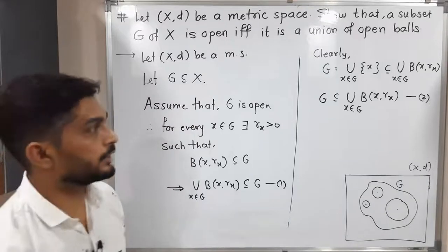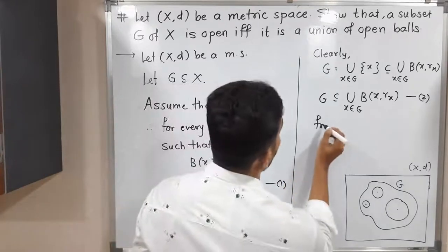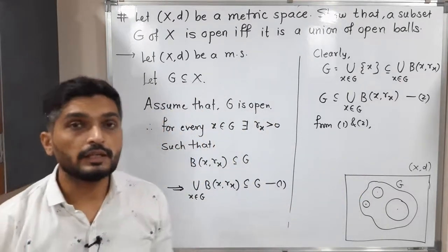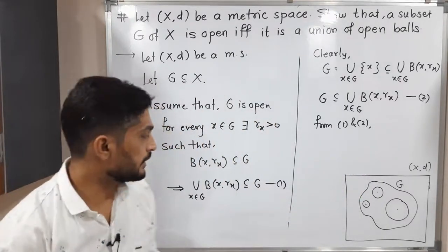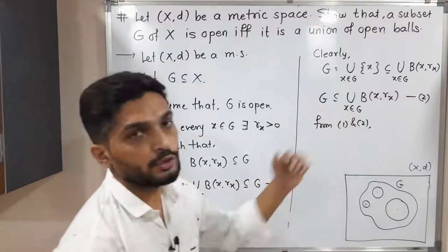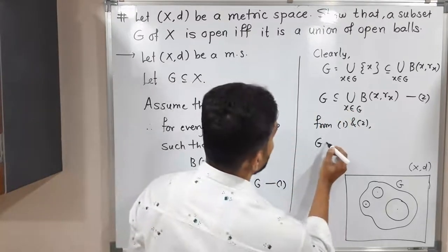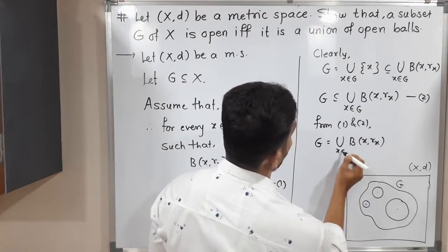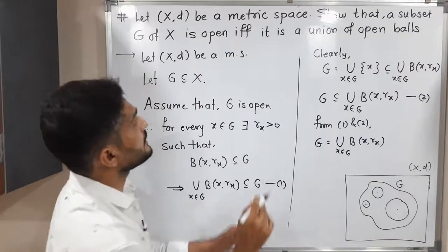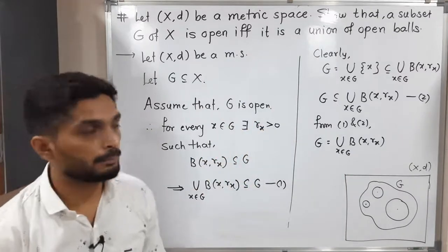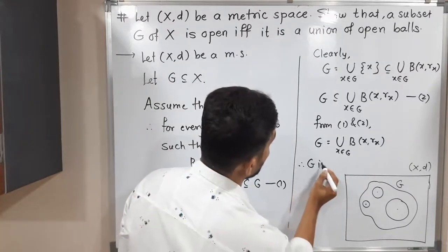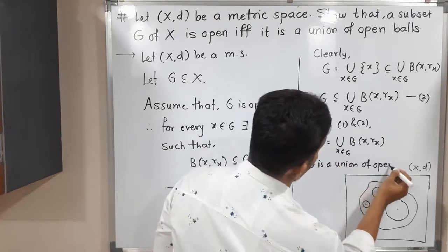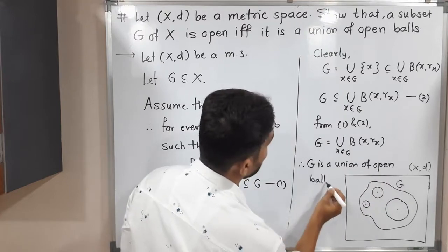Let us combine results (1) and (2). We know that if A ⊆ B and B ⊆ A, then both sets are equal. From (1) the union is a subset of G, and from (2) G is a subset of that union. Therefore G equals the union of B(x, R_x) for x belonging to G. So therefore we can say G is a union of open balls, and in this way we prove the first part.